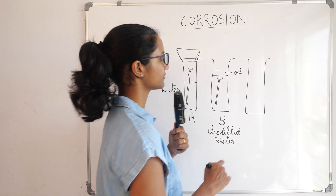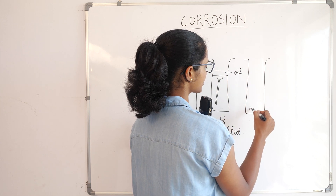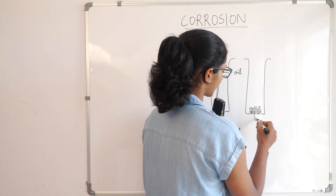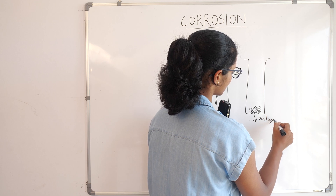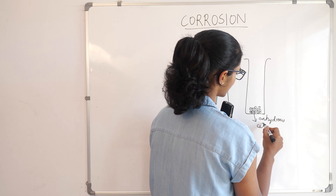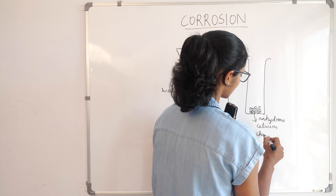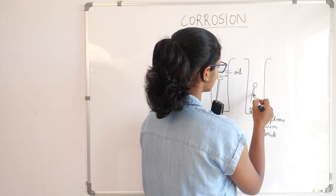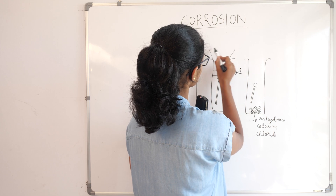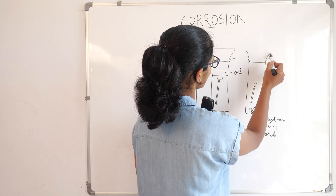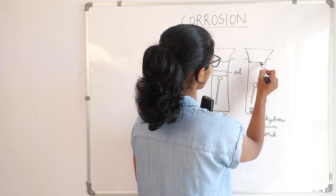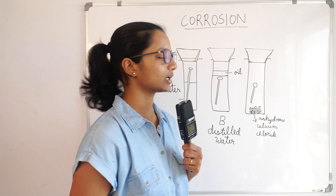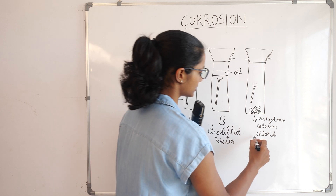In the third test tube C, we will add anhydrous calcium chloride and place the nail inside. All three test tubes will be closed to avoid any moisture or air coming in contact with the iron nails. Anhydrous calcium chloride is a drying agent.